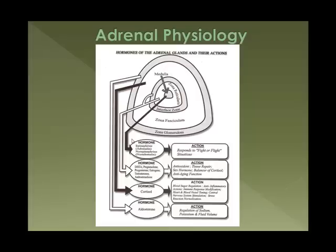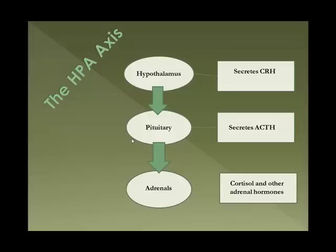Those last few — cortisol and aldosterone — come from the adrenal cortex, not the medulla, so you can see very distinctly different functions there. This is a graphical representation of the HPA axis. You have the hypothalamus up top that communicates to the pituitary by means of cortisol releasing hormone. That tells the pituitary to secrete adrenocorticotropic hormone, which tells the adrenals to make cortisol and several other adrenal hormones. There are also feedbacks that tell the pituitary and hypothalamus when they don't need to send those messages anymore.